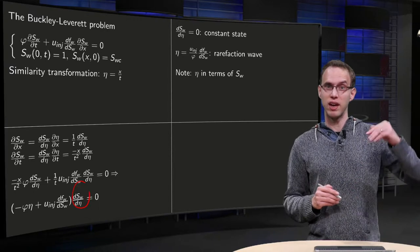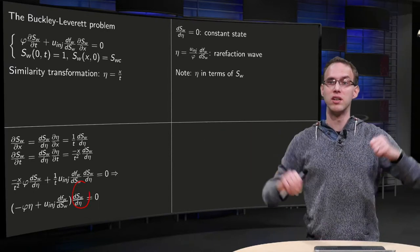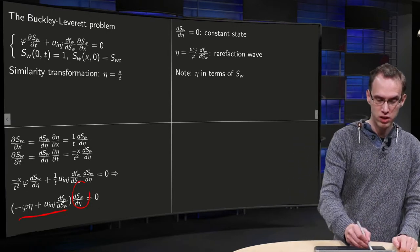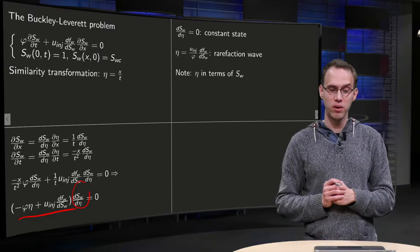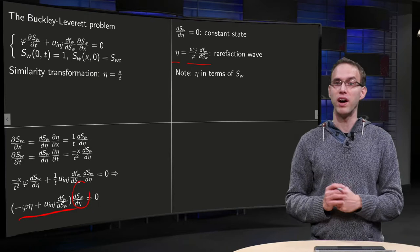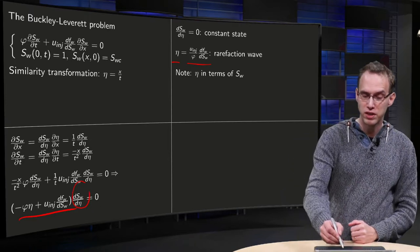But with a constant state we cannot connect the injection condition to the connate initial condition. Or, this can also be zero, which yields η equals u injector over φ times dfw/dSw, which is a so-called rarefaction wave.